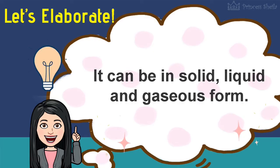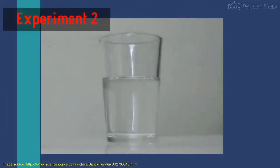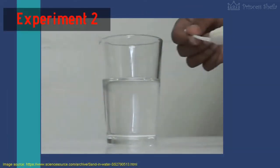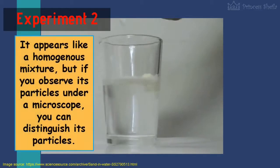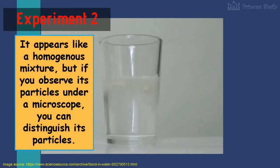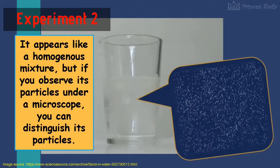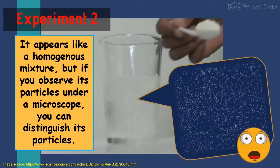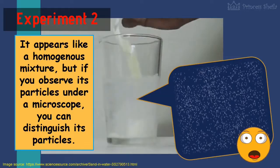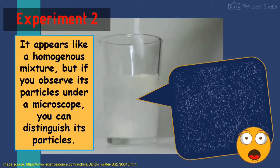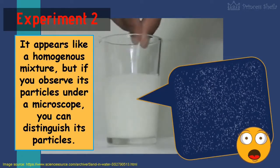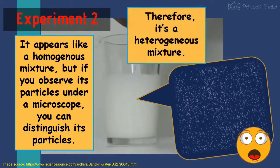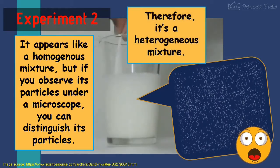Let's go back to our second experiment. It appears like a homogeneous mixture, but if you observe its particles under a microscope, you can distinguish its particles. Therefore, it's a heterogeneous mixture.